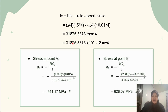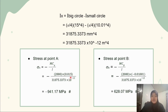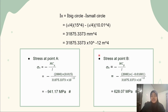After obtaining the area moment of inertia, we calculate the stress at points A and B using the formula: σ = −Mc/I, where I is the value we just obtained and M is the couple value. C is the distance from the centroid to the point. For point A, c = positive 0.015 m since it is at the upper part of the cross-section; for point B, c = negative 0.01001 m since it is at the lower part. After inserting all values, the stress at point A is negative 941.17 MPa and the stress at point B is 628.07 MPa.